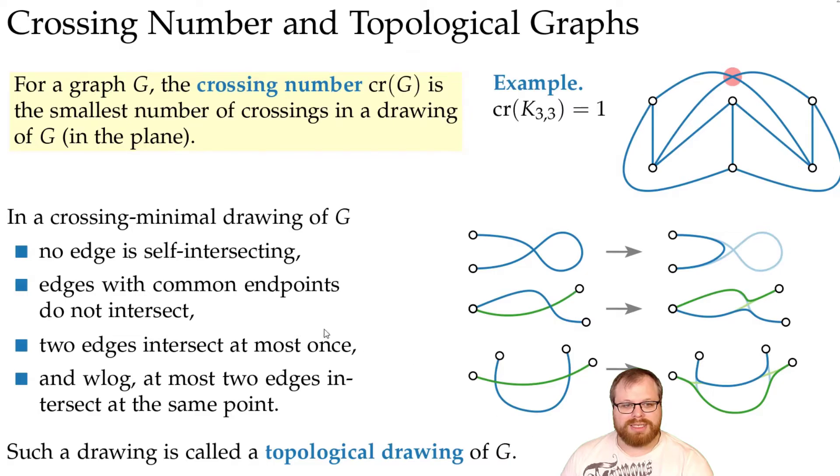Such a drawing that has these properties is called a topological drawing. And all drawings that minimize the number of crossings of a graph are topological.